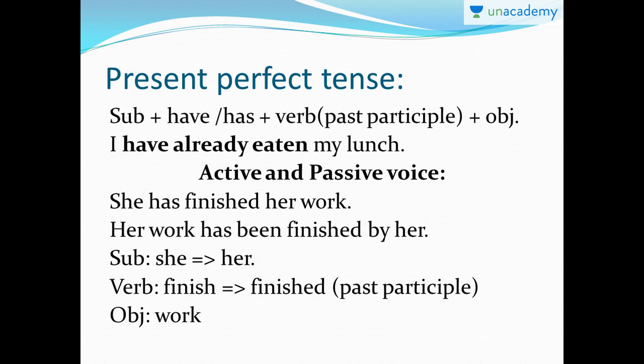Let's get started. If you've forgotten how to form a sentence in the present perfect, here's a quick revision. If you want a detailed explanation about present perfect tense, I suggest you go back and watch my other videos where I've explained all the tenses clearly. For present perfect tense, you start with the subject, plus the perfect word — either 'has' or 'have' depending on the subject — plus the verb in past participle form, plus the object.